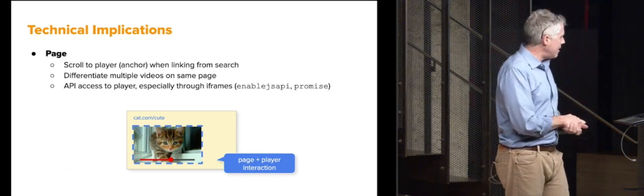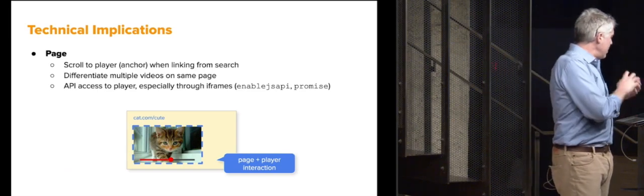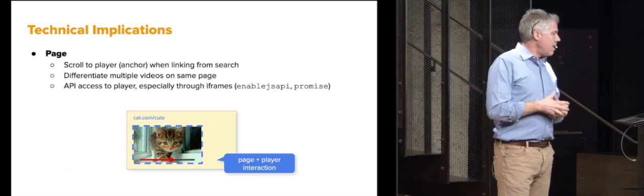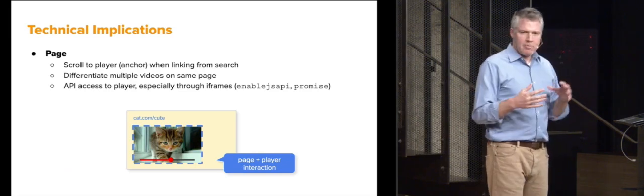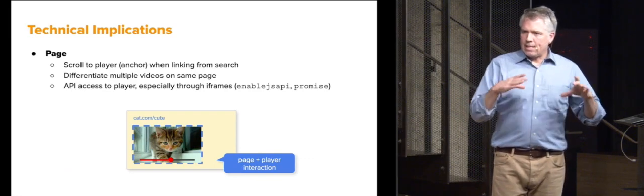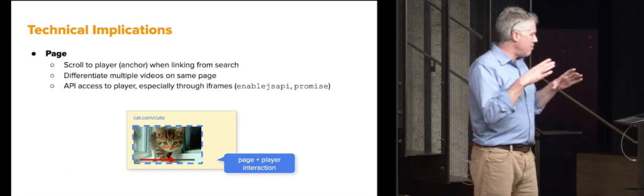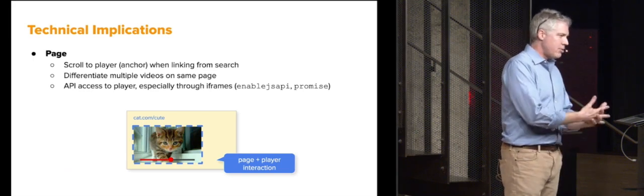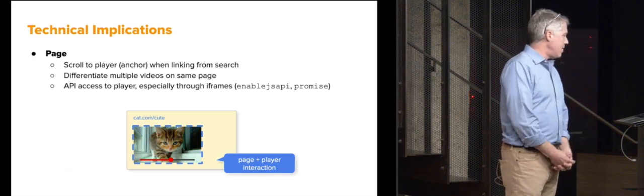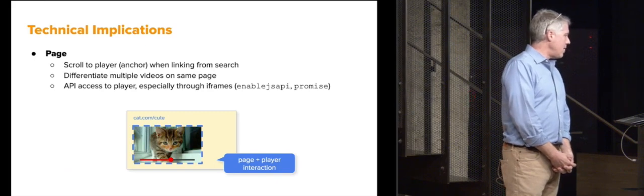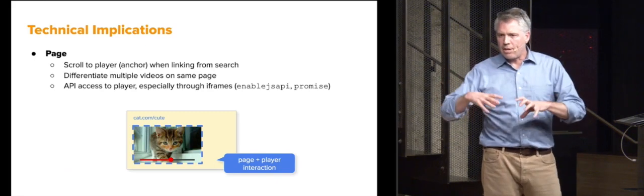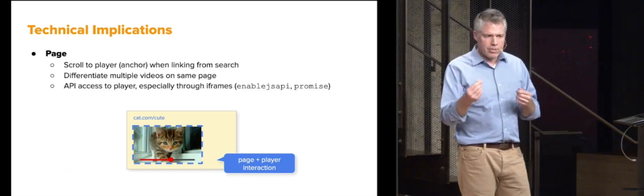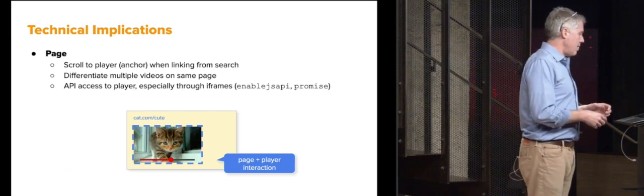You're going to want API access. You're going to want to allow the page scripts and other elements API access to the players, especially through iframes. And that becomes—it's surprising how many layers of iframes quickly get on to a page, especially with something like WordPress. And so the enable JS API is one of the parameters of your iframe that's going to play an important role. Some of the promises to know when you're getting and setting timeframes is going to be important.